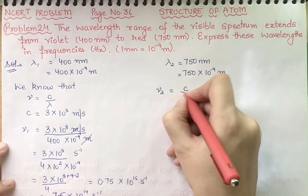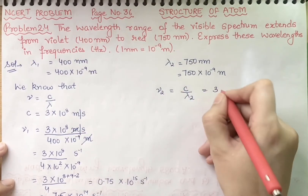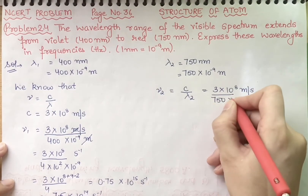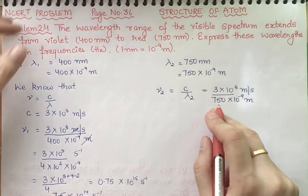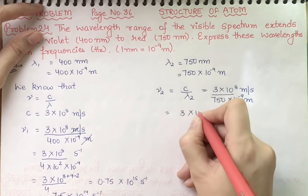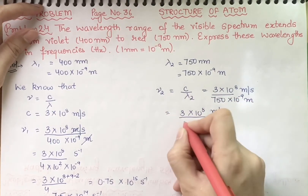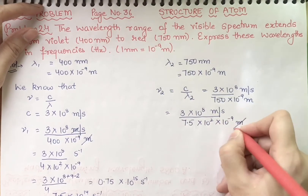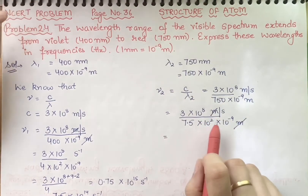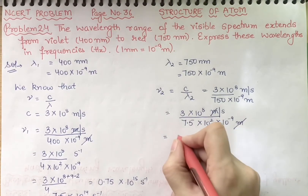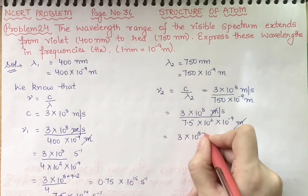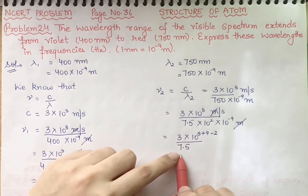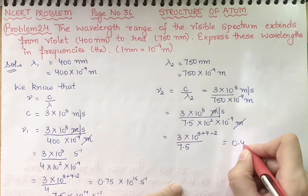Now we find nu two, which equals c by lambda 2. The velocity of light is 3 into 10 raised to power 8 meters per second, divided by 750 into 10 raised to power minus 9 meter, which we write as 7.5 into 10 raised to power 2 into 10 raised to power minus 9 meter. We cancel meter with meter and merge the powers: 3 into 10 raised to power 8 plus 9 minus 2, divided by 7.5. Dividing 3 by 7.5 gives 0.40.